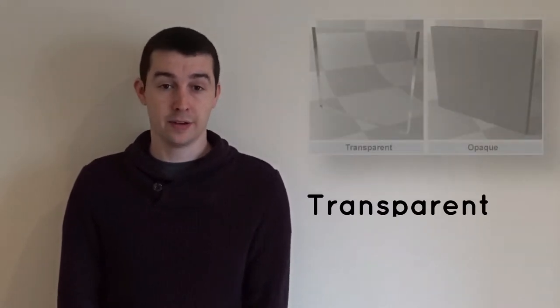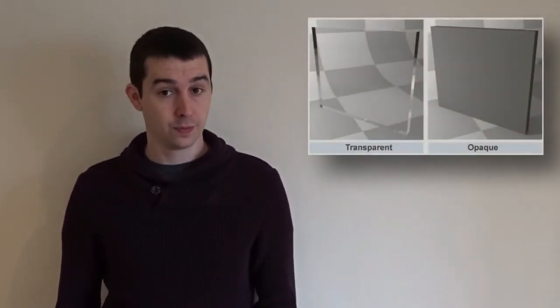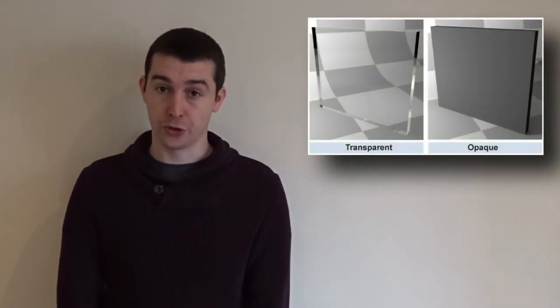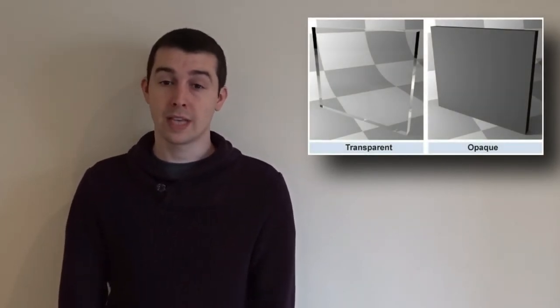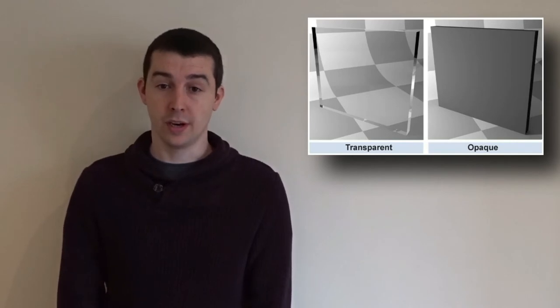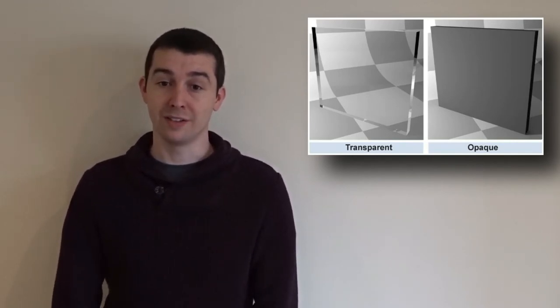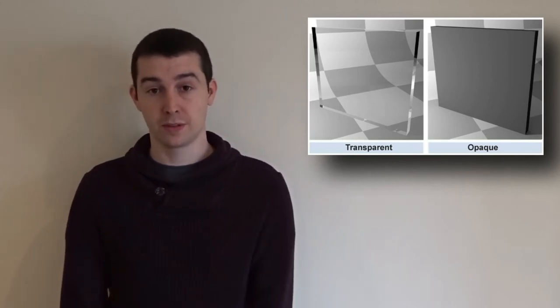You should already know that objects can be classified as transparent, letting light pass through, or opaque, not letting light pass through. We will now examine in more detail what happens when light interacts with opaque objects that are reflective in nature, and with transparent objects.